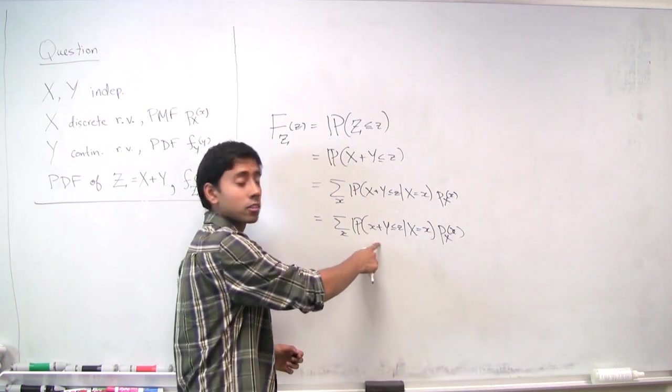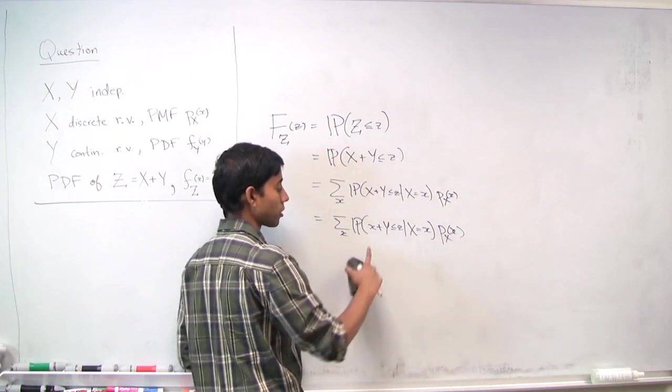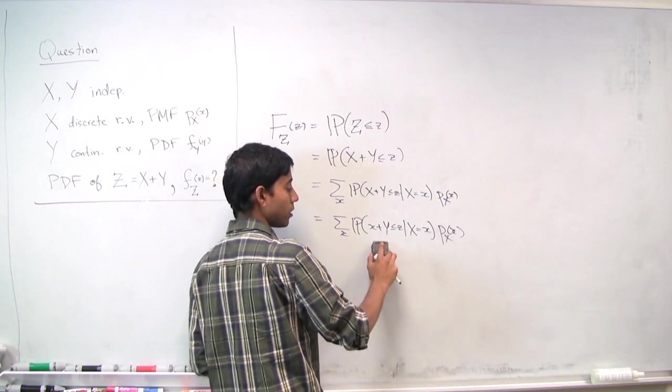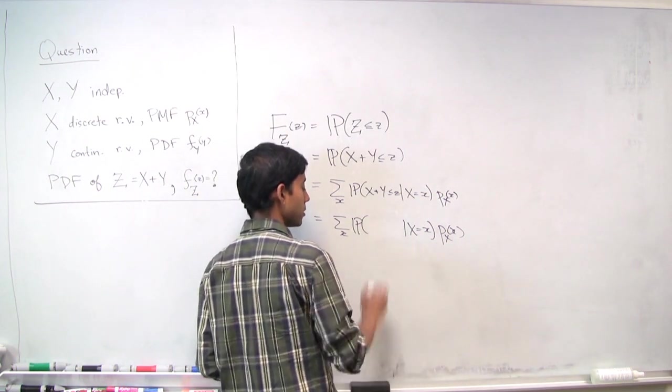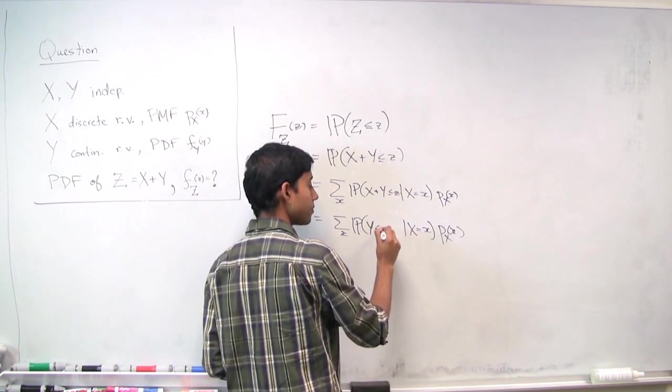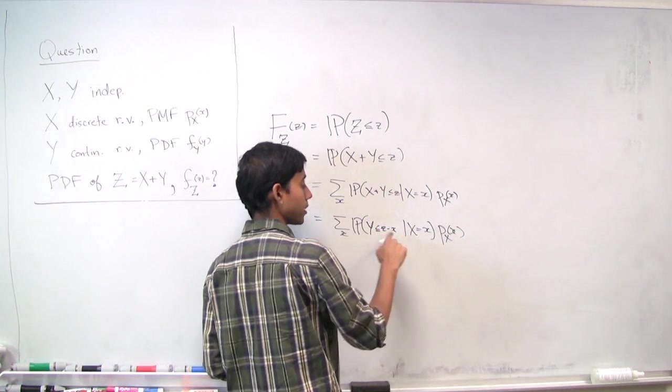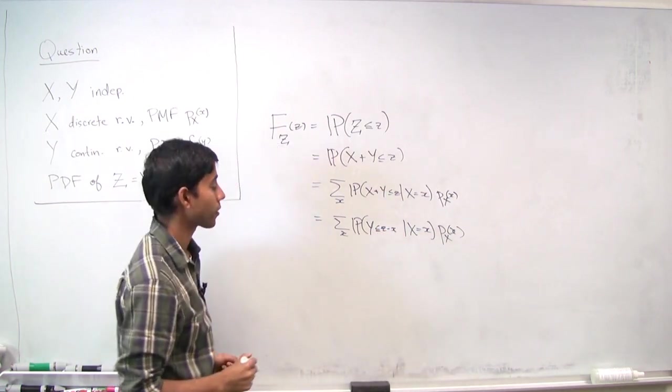And now I'm going to rearrange this so that it looks a little nicer. So I'm going to have y on the left and say y is less than z minus x, where z minus x is just a constant.